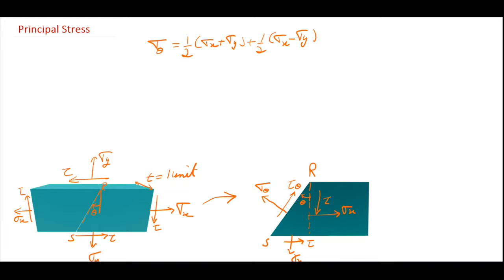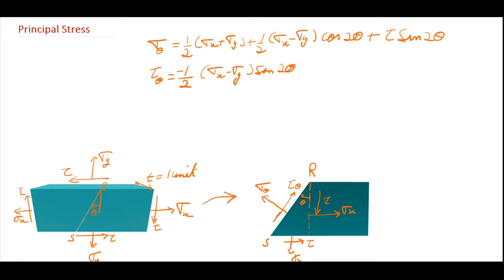...the normal stress equation is: Sigma theta = (1/2)(Sigma X + Sigma Y) + (1/2)(Sigma X − Sigma Y) cos 2theta + tau sin 2theta. The tangential stress Tau theta is given by minus (1/2)(Sigma X − Sigma Y) sin 2theta + tau cos 2theta. The negative sign indicates the shear is acting in the anti-clockwise direction, opposite to what was assumed. These are two important equations (1) and (2).